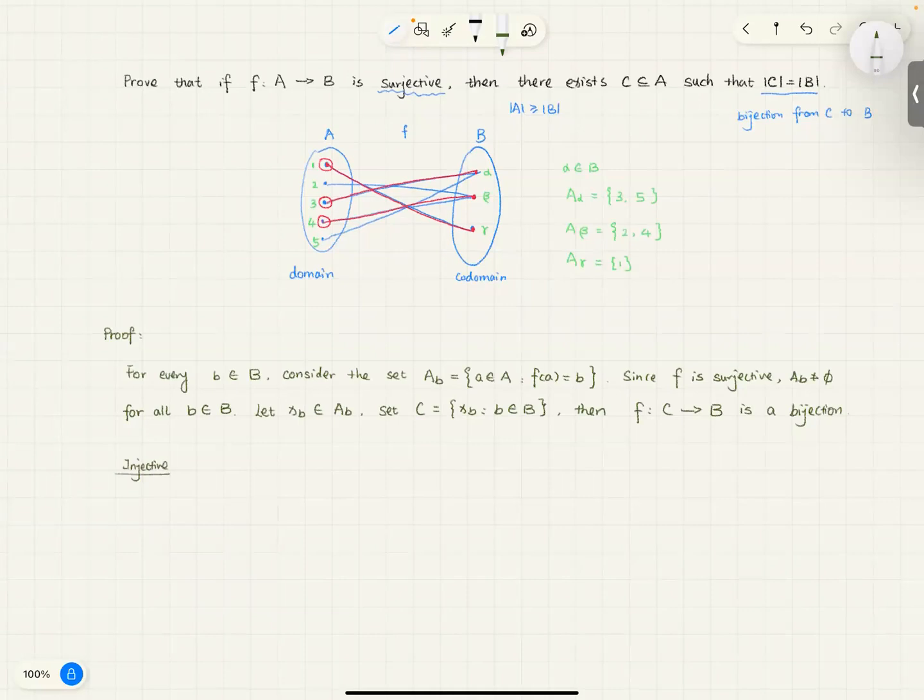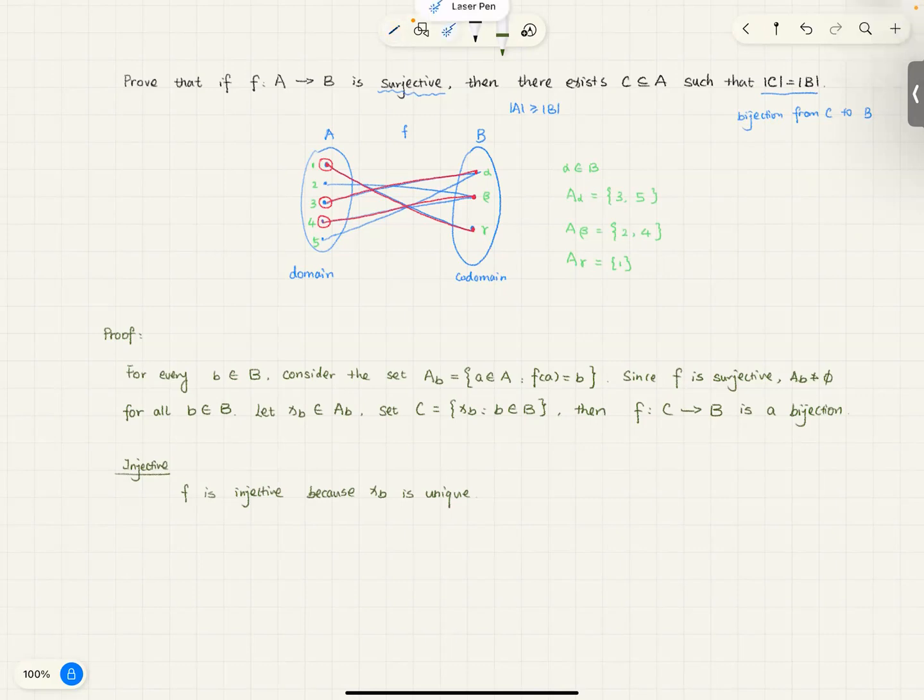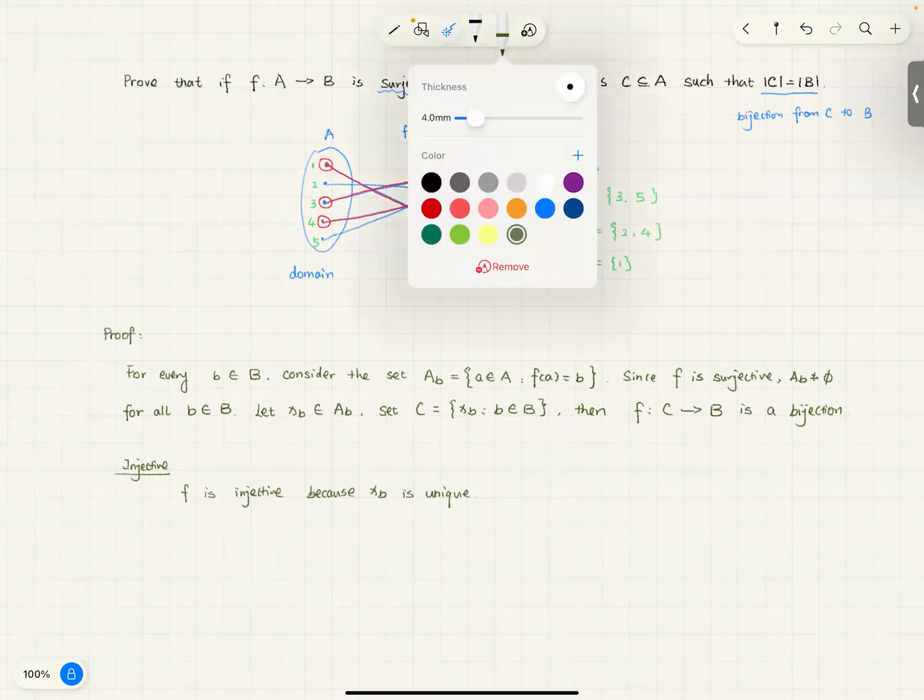Injectivity. It's injective. f is injective because x_b is unique. I'm not going to have two different elements from two different sets. Because you're not going to have the same element in two different sets. That's by the definition of function. You cannot have one element mapped to two different sets. So, it has to be unique. Injectivity.